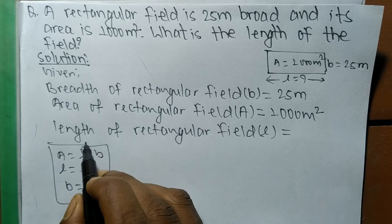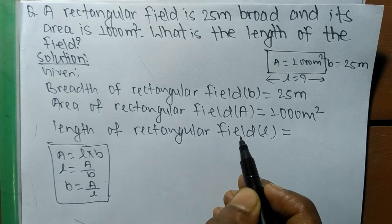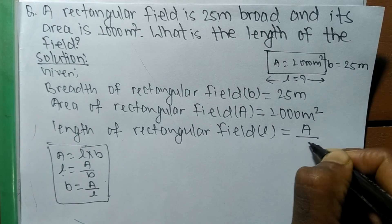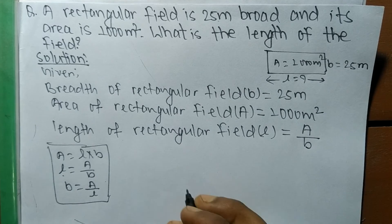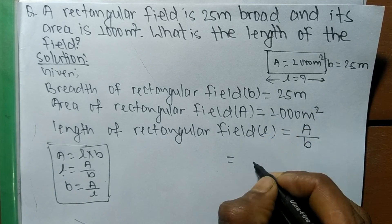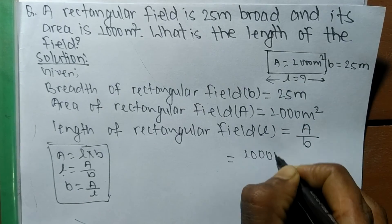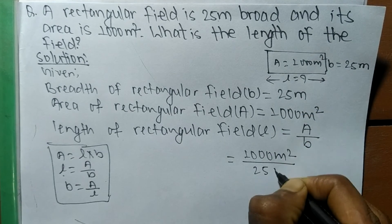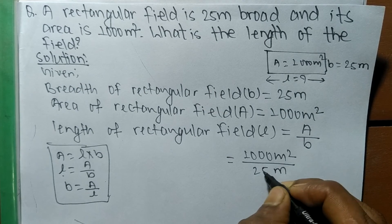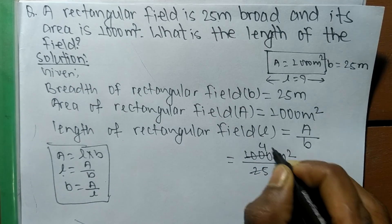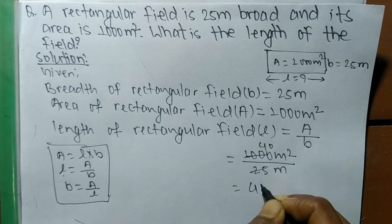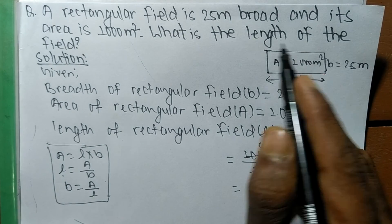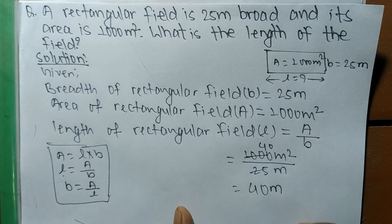Here we have to find out the length of the rectangular field, so l equals A divided by b — area of rectangle divided by breadth. The area given is 1000 meter square, and the breadth given is 25 meters. Dividing gives us 40, so the length of this rectangular field is 40 meters.